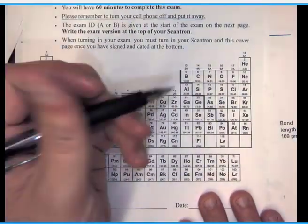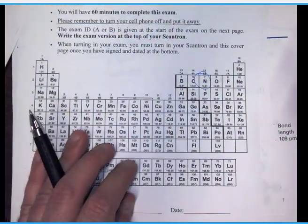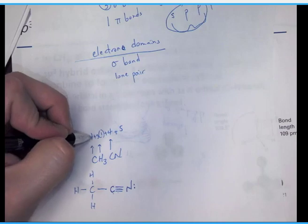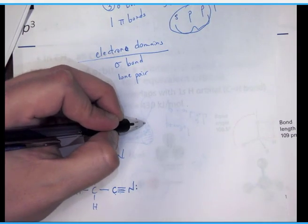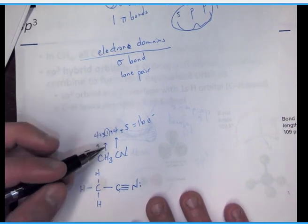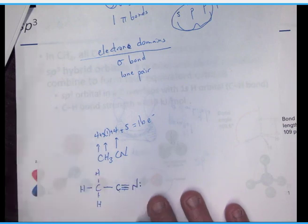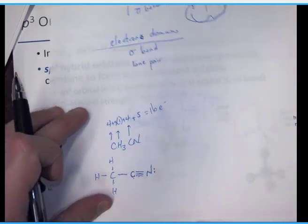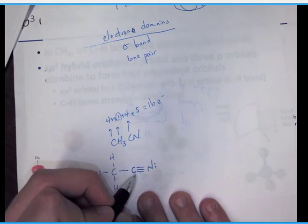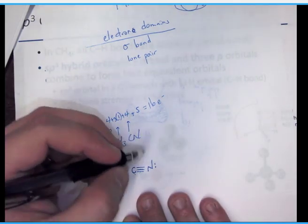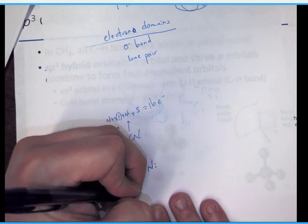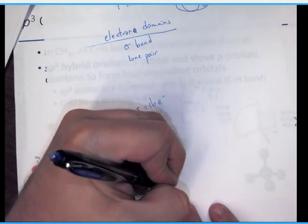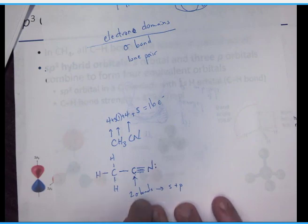To validate using the long Lewis structure method: each carbon has four valence electrons, each hydrogen has one (three hydrogens = 3), nitrogen has five valence electrons — that gives four plus three plus four plus five = sixteen total electrons to account for. Counting electrons in the drawn structure: two, four, six, eight, ten, twelve, fourteen, sixteen — the Lewis structure is validated.